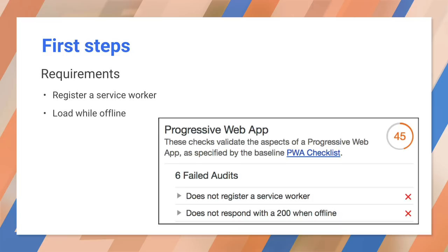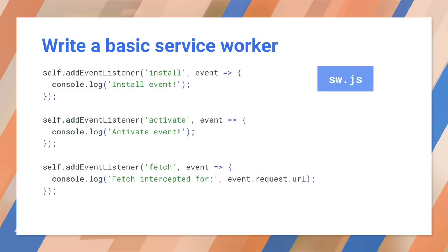Let's solve the first problem: adding a service worker. Begin by creating an empty sw.js file at the same level as your home page. You might be tempted to create this in a subfolder, but for now it has to be at the top level. Now we'll add the code to load the service worker — open index.html and add a script block.